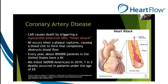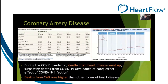An MI occurs when a plaque ruptures, causing a blood clot to form that completely obstructs blood flow. Every year, about 805,000 patients in the United States have a myocardial infarction. MIs killed 360,900 Americans in 2019, and one in five of these deaths occurred in patients under the age of 65. During the COVID pandemic, deaths from heart disease actually went up, surpassing deaths from COVID-19.